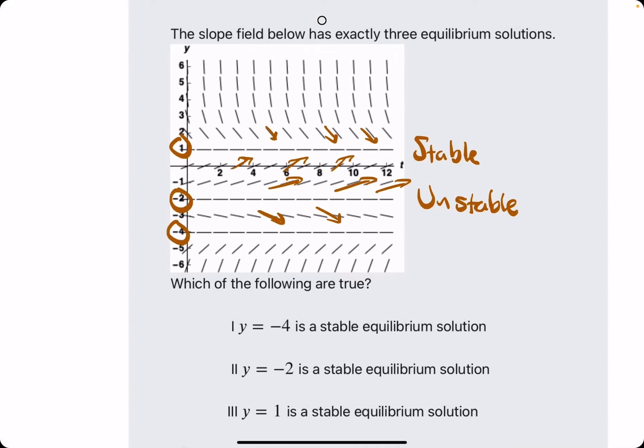And, negative 4. Again, the lines above it are going towards it, and the lines below are going towards it. This is a stable solution.